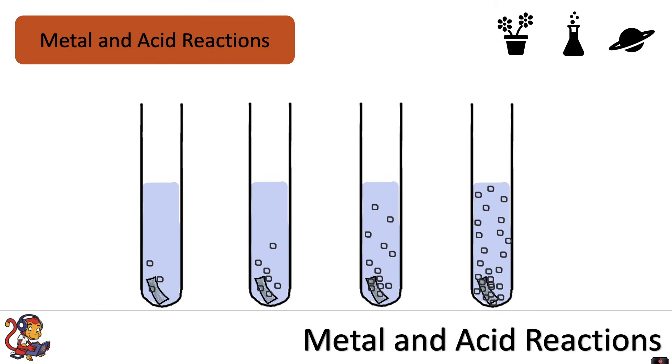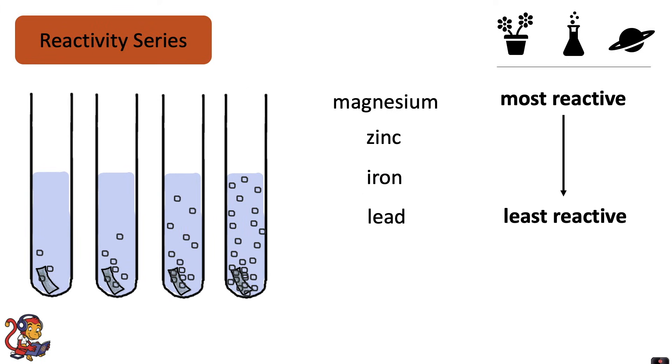You can observe how different metals react with acid—for example, the first one could be lead reacting with acid, and then iron, and then zinc, and finally magnesium. With your observations, you can put these metals in order of their reactivity. So we would have magnesium as the most reactive, followed by zinc, and then iron, and finally the lead as the least reactive.